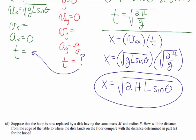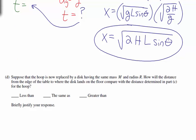The final part says: suppose the hoop is replaced by a disc having the same mass and radius. How does the distance from the edge of the table to where the disc lands compare with the distance in part C? The distance depended on the velocity of the center of mass, so we need to understand how that velocity will be different for the disc versus the hoop.